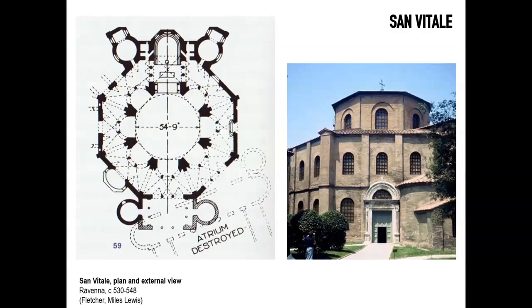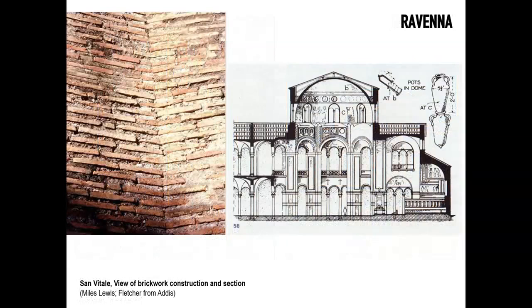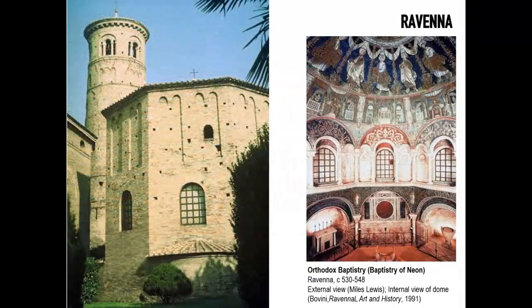This Byzantine influence is evident in San Vitale — an octagonal church in Ravenna based from a layout point of view on the Temple of Minerva Medica, which still survived as a ruin in Rome. You can see the method of construction: bricks with fairly generous mortar joints. The approach here is an octagonal plan surmounted by a semicircular dome, with the use of mosaics inside, as well as the use of pots in the dome — a technique often used by the Romans.